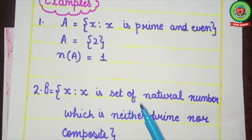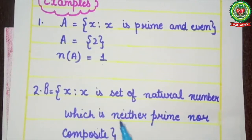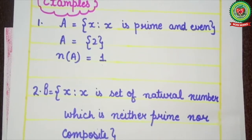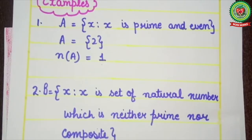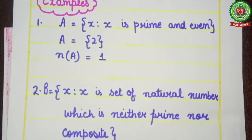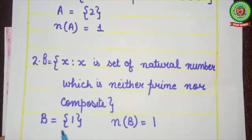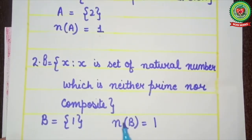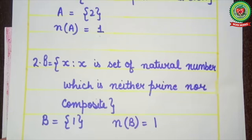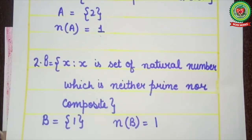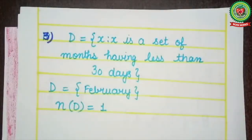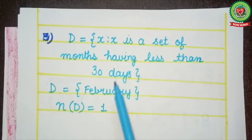Now, set B = {x | x is a natural number which is neither prime nor composite}. Which natural number is neither prime nor composite? That is only the number 1. So in roster form, B = {1} and its cardinal number is also 1, therefore it is a singleton set.